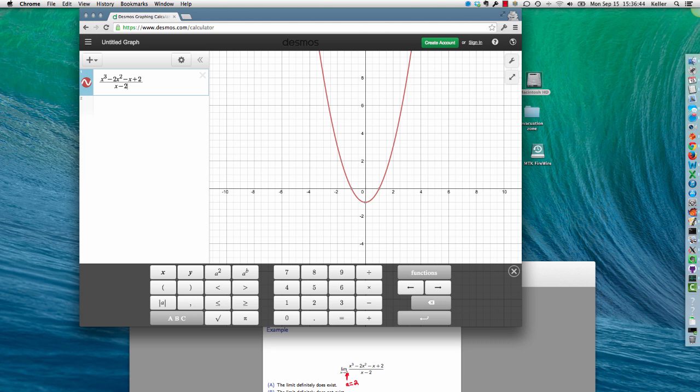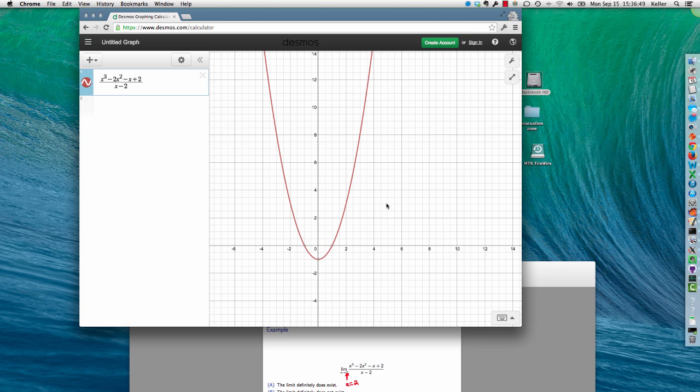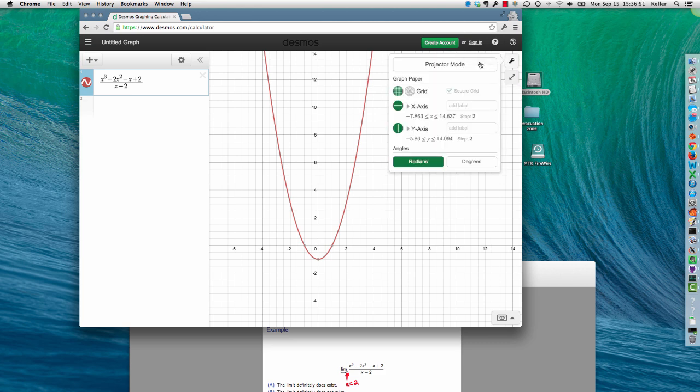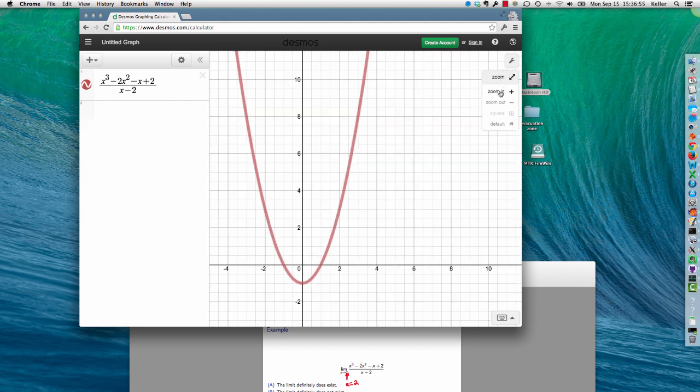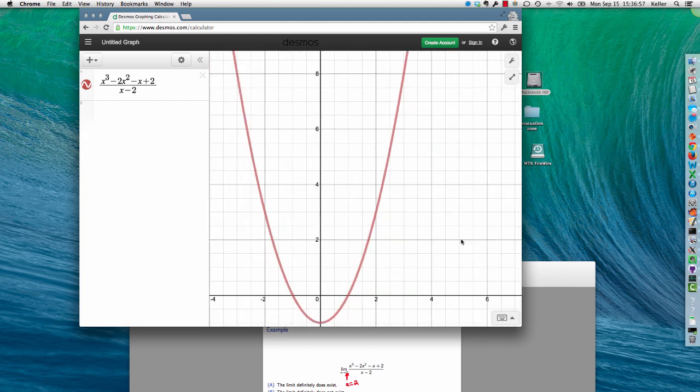And so there's a graph of that, and we're looking at the limit as x approaches 2, but is not actually equal to 2. So we can come here, and we can do zoom in, and we look, and we say, okay, so x approaches 2.